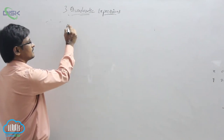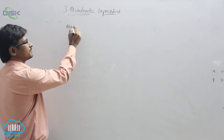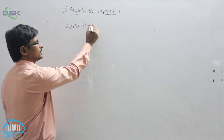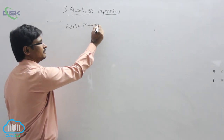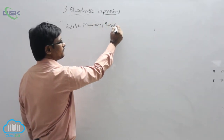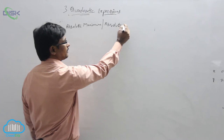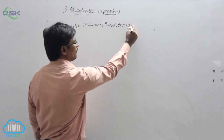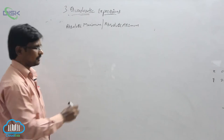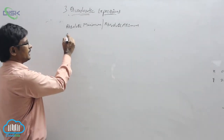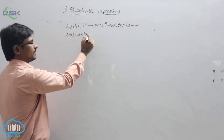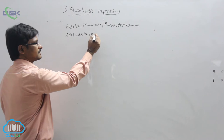We will see the absolute maximum and absolute minimum value by using the method of maximum and minimum in calculus. So let f of x equal to ax squared plus bx plus c.